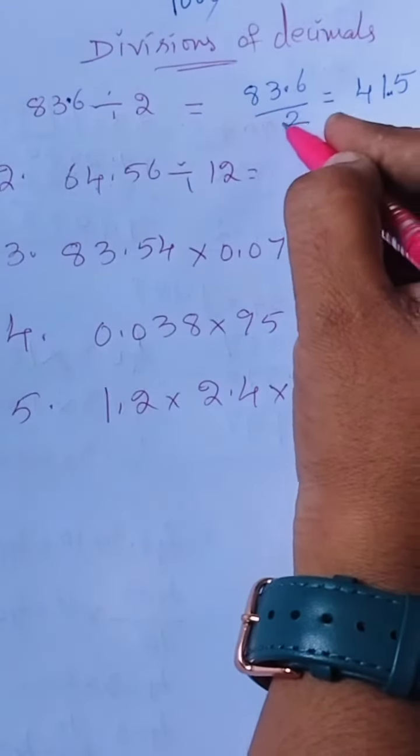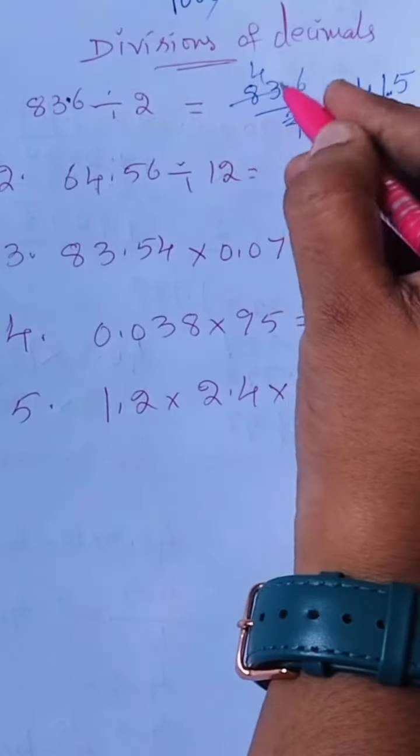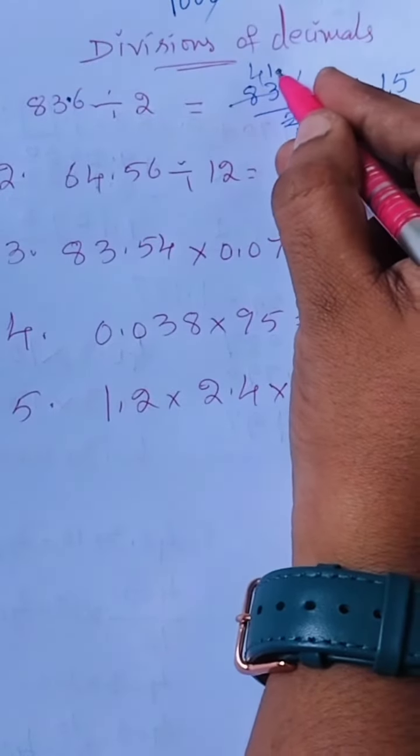So here it is 83.6 by 2. It means two ones are two, fours are two, ones are two. We keep the point, so 41.8.